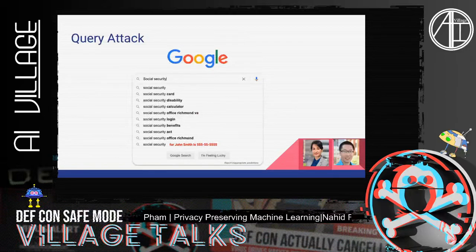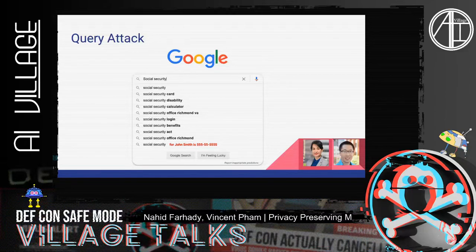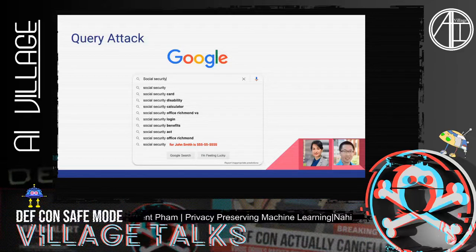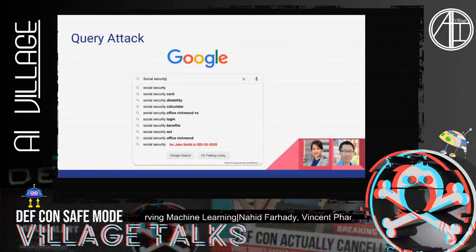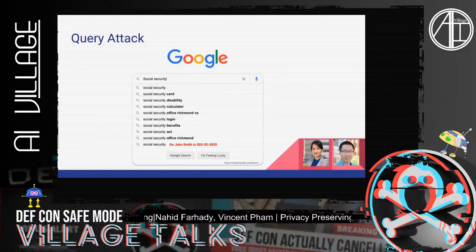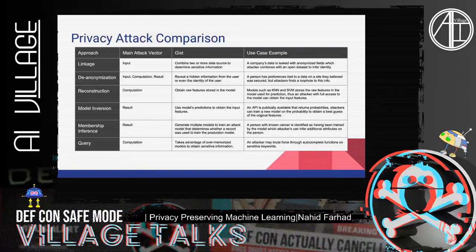We also have a query attack, which is more prone to models such as LSTM or models that learn from a time series of data points. For example, you might have a Google search where you start typing 'social security' and it does an autocomplete — one of the suggestions could be sensitive information such as a phone number or social security of a person. This is more prone to models that are over-memorizing, where records might appear at least five times in the neural network model.